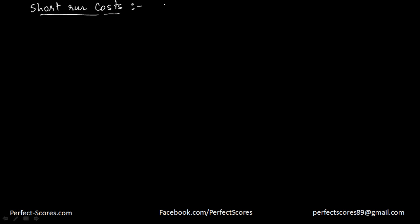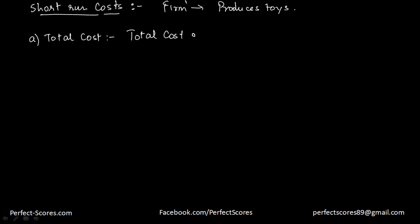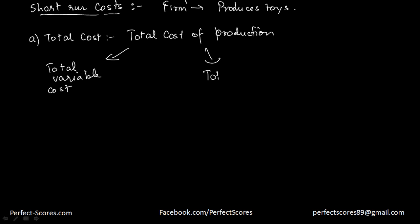Let's suppose we take an example where there's a firm which produces toys. It will actually incur something known as total cost, which is the total cost of production. Now there are two kinds of total cost: you have your total variable cost and you have your total fixed cost. These are denoted as TVC and TFC respectively.